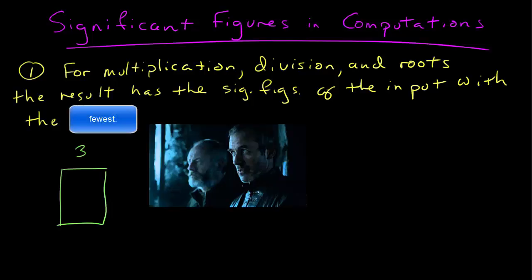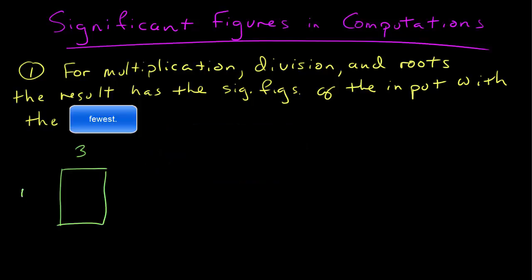The result has the same number of significant figures as the input that has the least. So, for example, I have a square here. One side is 3, that's one significant figure. Then say the other side is 6.4. I'll give them meters.